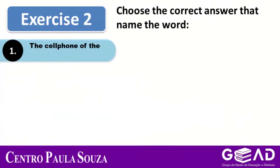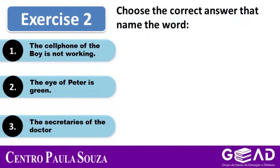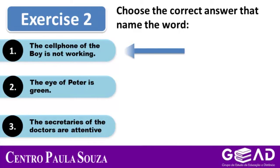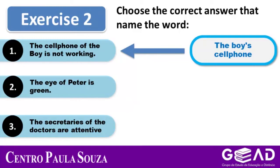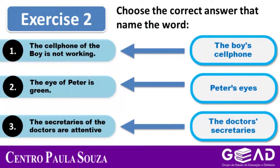Choose the correct answer that names the word. The cell phone of the boy is not working. The eye of Peter is green. The secretaries of the doctors are attentive. One: The boy's cell phone. Two: Peter's eyes. Three: The doctor's secretaries.